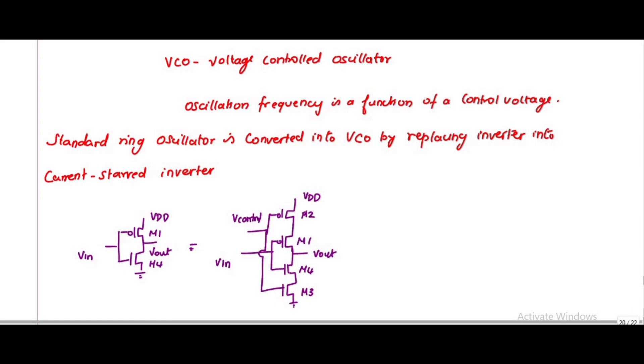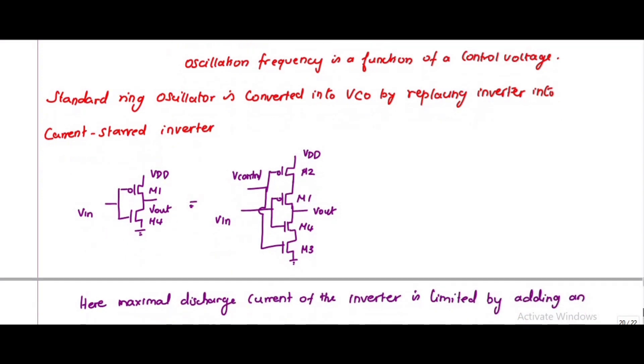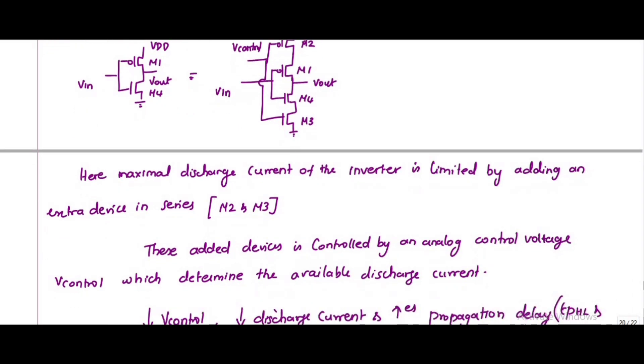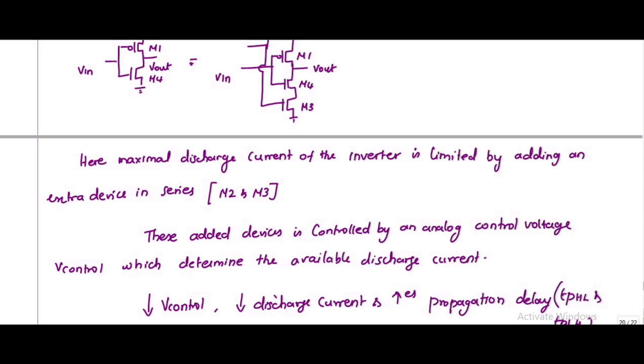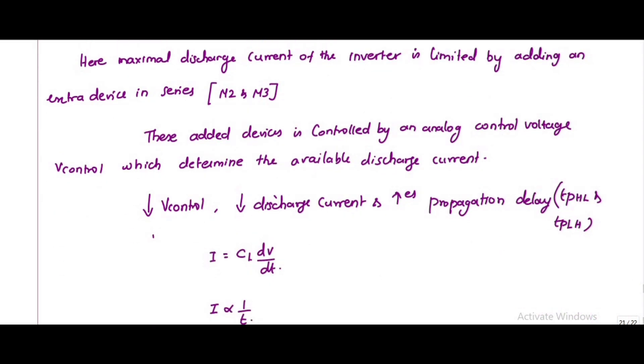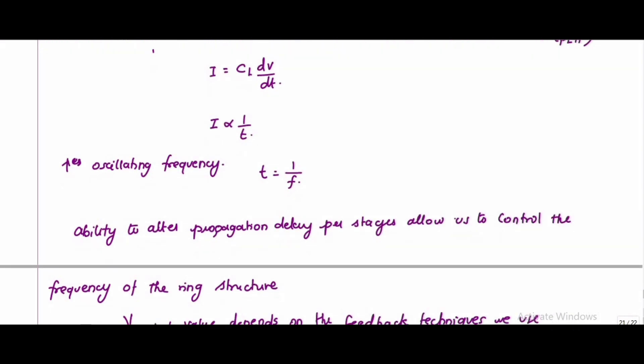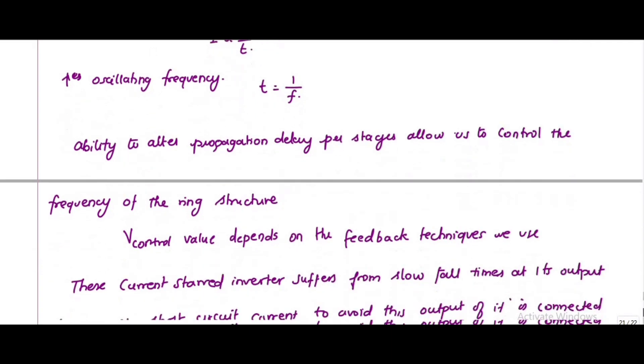The maximal discharge current of this inverter is limited by adding these extra devices controlled by an analog control voltage V-control, which determines the available discharge current. If I decrease V-control, it will decrease the discharge current, thereby increasing the propagation delay tpHL and tpLH. Since current is inversely proportional to time, and time and frequency are inversely proportional, decreasing the time increases the frequency. This ability to alter the propagation delay per stage allows us to control the frequency of the ring structure.